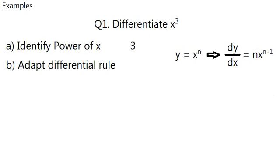so n equals 3. On this side it would look like this. So everyone can do this now. 3 minus 1 is 2, so the answer is 3x squared. This is how to differentiate a single term number.